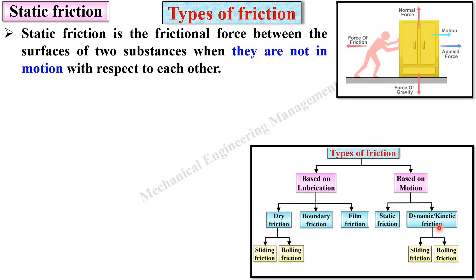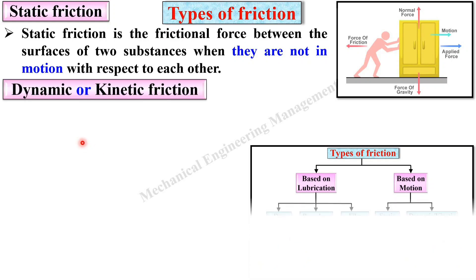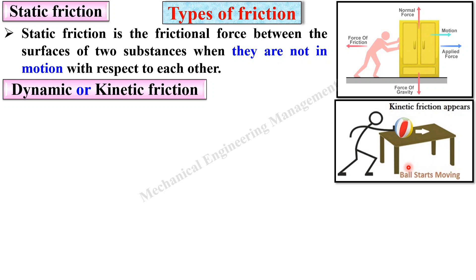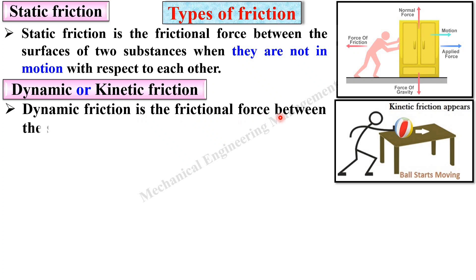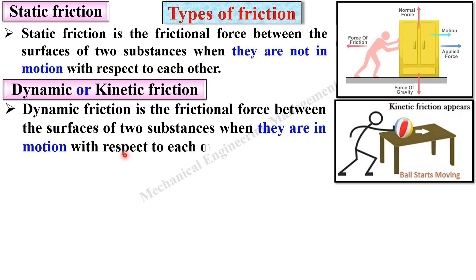Next is dynamic or kinetic friction. In this figure you can see a ball having motion — when the ball starts moving, the friction between the surfaces is known as kinetic friction. Dynamic or kinetic friction is the frictional force between two surfaces when they are in motion with respect to each other. In static friction there is no relative motion; in dynamic friction there is relative motion.